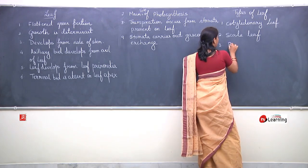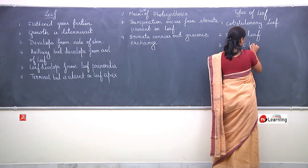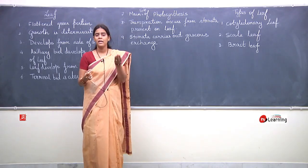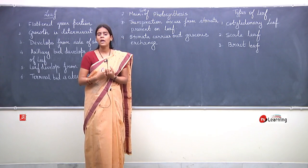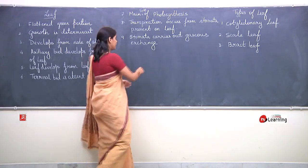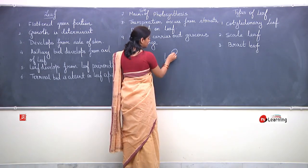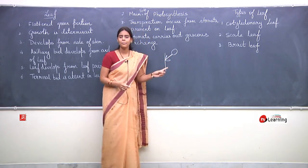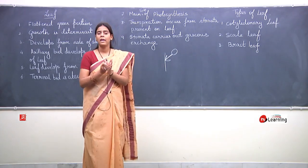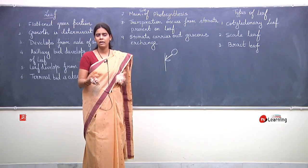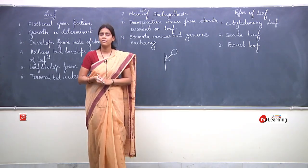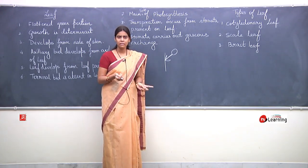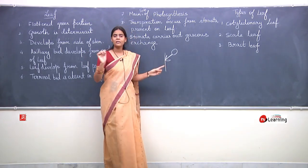Third is bract leaf. Flower ke base se, stem aur flower ke junction se — yani pedicel ke neeche se — jab koi outgrowth develop ho, tab use bract kaha jata hai. Sometimes bracts are present in flowers which are modified into large or colored structures. Outgrowth present at the junction of flower and stem is known as bract leaf.